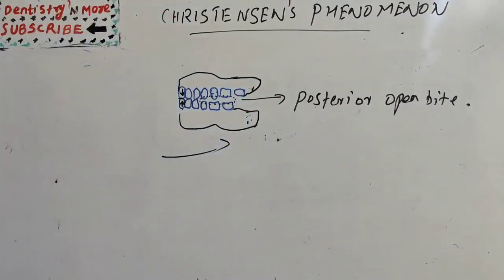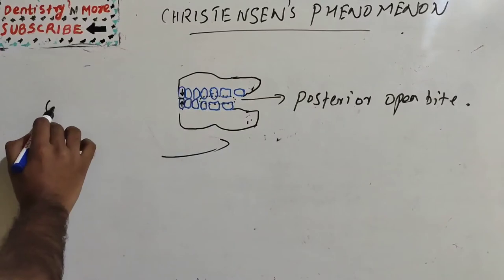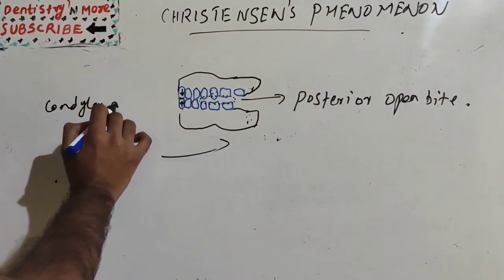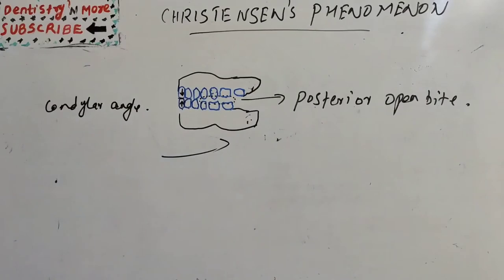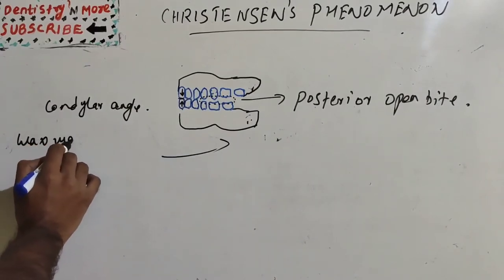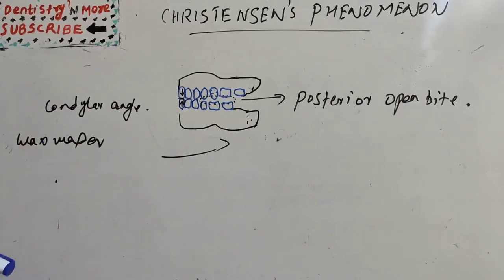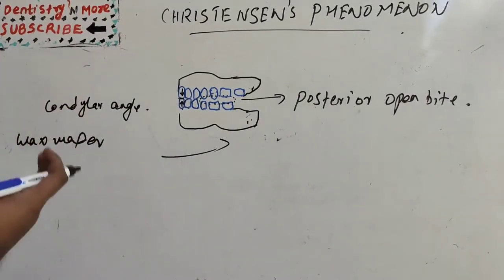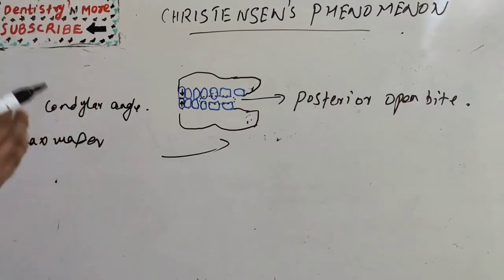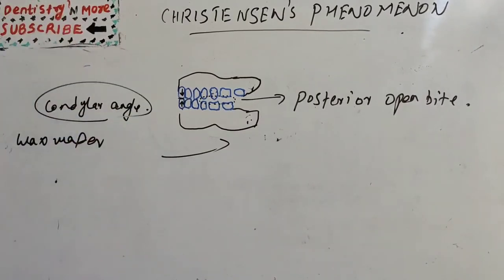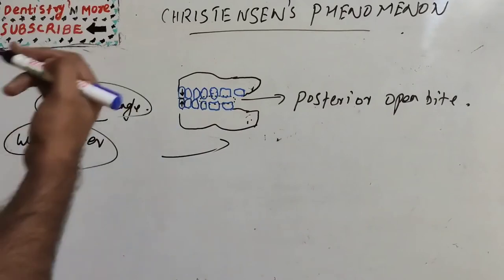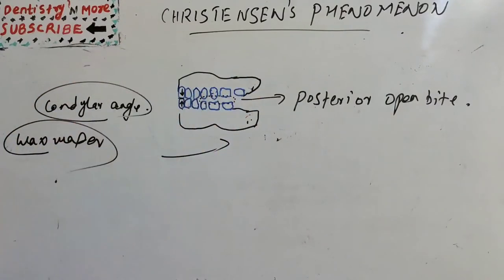This gap is always proportional to the condylar angle. We need to use a wax wafer to record it, which can subsequently be used to set the condylar angle on the articulator. The condylar angle should be recorded using a wax wafer and adjusted on the articulator so we get simultaneous anterior and posterior contact when the mandible moves forward.